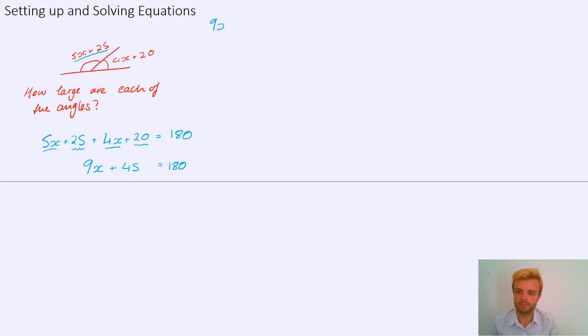So if I just write that out again up here, 9x plus 45 equals 180. Well, we'll start by taking 45 away from both sides. And that's going to give us 9x on the left equals 135 on the right. Next we're going to need to divide by 9 to get the x by itself, leaving us with x equals 15. But that last step might be calculator. And now we know what x is, we can work out the size of each of those angles.